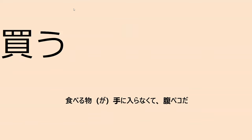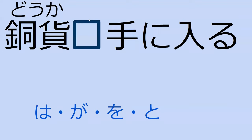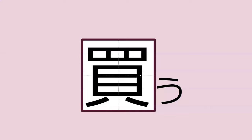So now we have a new verb, which is kau. You know what kau means? It's to purchase — yes, to purchase. And our next word is dooka. This word is very specific for this book; it's a copper coin, the type of money they use in the story. What particle do you think dooka would get? With te ni hairu — ga. Yep, ga. Perfect.